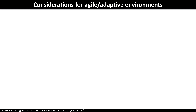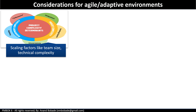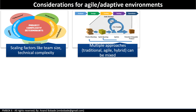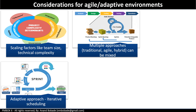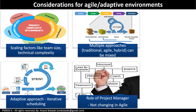Considerations for agile and adaptive environments: in larger organizations, there may be a mixture of large and small projects. Scaling factors like team size, geographical distribution, regulatory compliance, and technical complexity should be considered in project planning. To deliver larger enterprise-wide systems, multiple approaches — traditional predictive, adaptive, or hybrid — can be used. Let's discuss iterative scheduling and the project manager's role in detail.